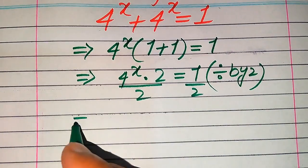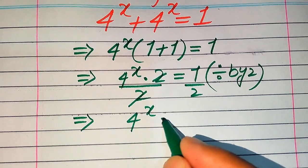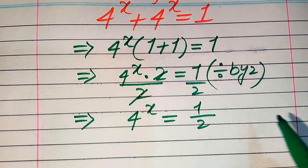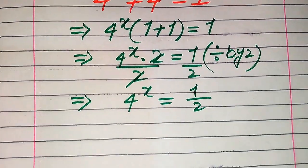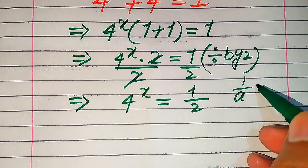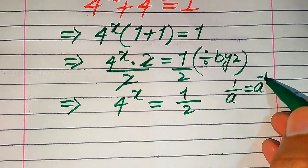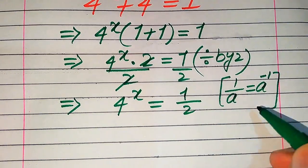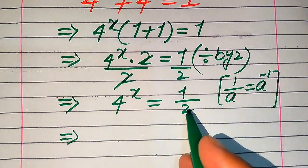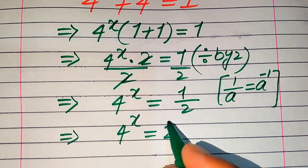This 2 is cancelled out by this 2 and we get 4 to the power of x equals 1 divided by 2. Now, you know that if we have 1 over a and we move this a upside, its exponent becomes negative — we write it as its inverse. So according to this rule, when we move this 2 to the upside it becomes 2 inverse.